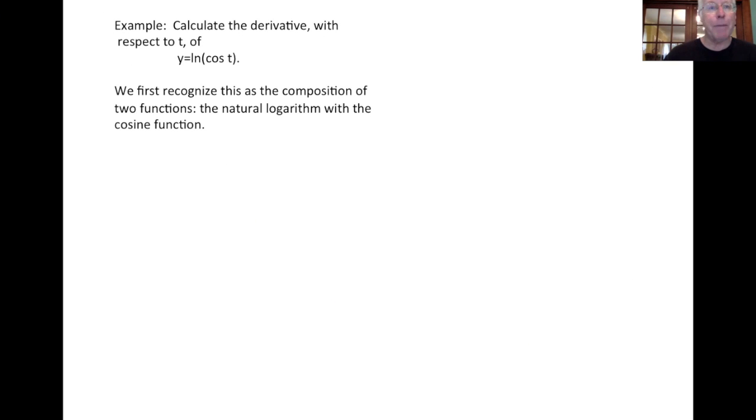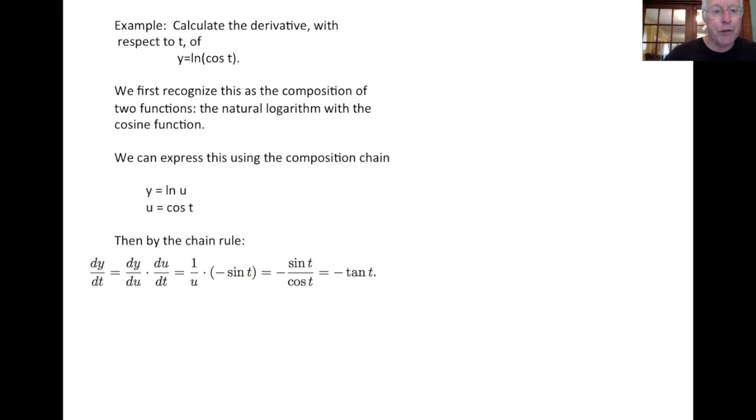We'll finish with a couple of examples. Easy one first. Let's calculate the derivative with respect to t of the natural log of cosine of t. I recognize first this is a composition of two functions. It's the natural log function composed with the cosine. Given t, we compute cosine t, put that answer into the logarithm. Now we can express this as a composition chain. We like to work from the outside in. The last thing we do here is take a logarithm. So we're going to think of y equals log of u, and then the u is cosine t. And so this breaks the composition apart for us.